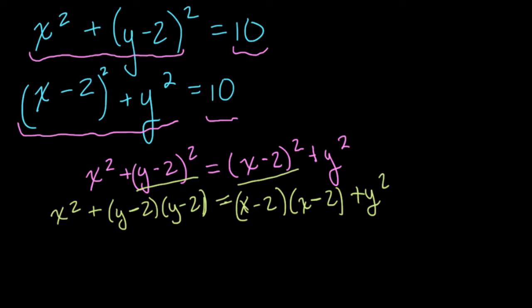And now we can use the distributive property. So we have x squared plus y squared minus 4y plus 4 equals x squared minus 4x plus 4 plus y squared. Quick recap: I got y times y is y squared.